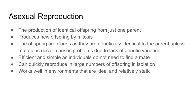Asexual reproduction is the production of identical offspring and it is usually due to mitosis. These offspring are clones and they are genetically identical to the parent unless any mutations occur, which does in fact cause problems due to lack of genetic variation within the species that reproduce asexually. It is quite efficient and simple as individuals do not need to find a mate to quickly reproduce in large numbers, and it does work well in environments that are ideal in their characteristics and relatively static.